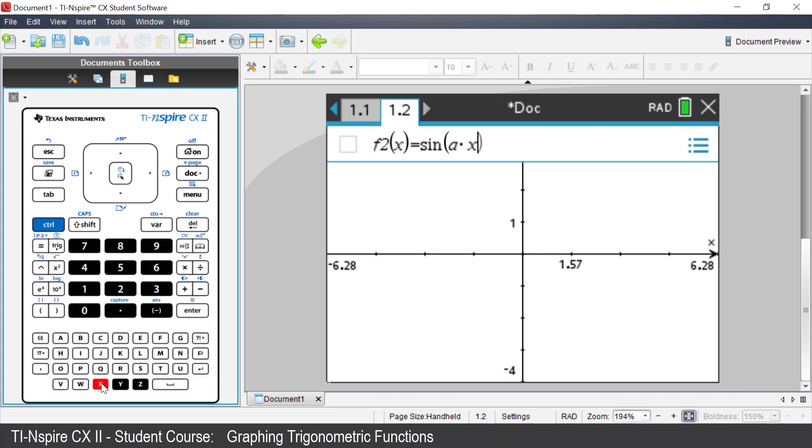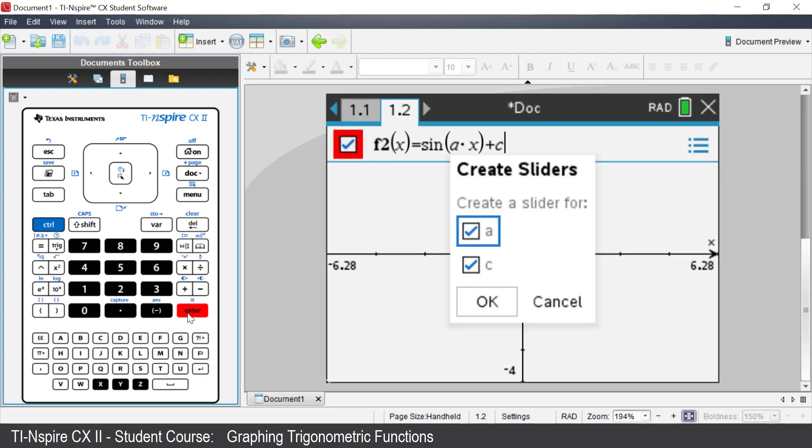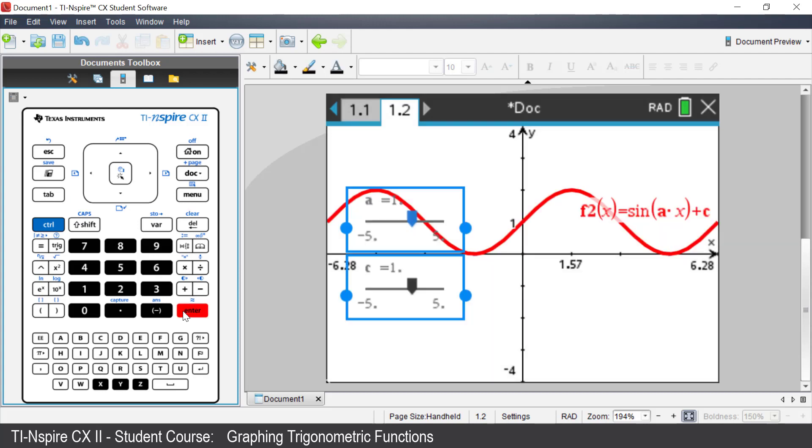the calculator will recognize AX as one variable. And then plus C. Press Enter. There will be a window as shown, and there is a slider for the frequency for A and C.